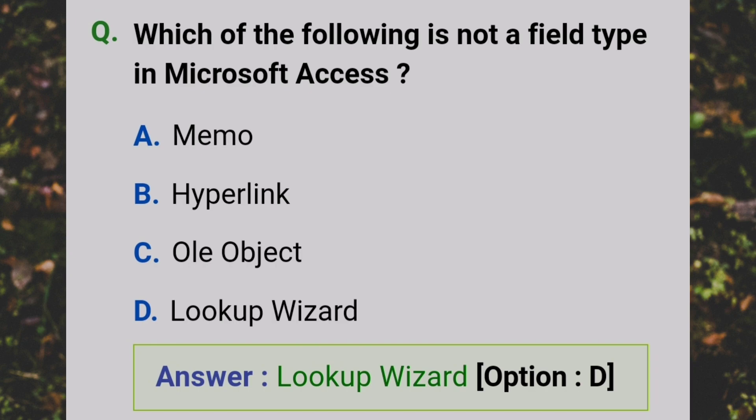Which of the following is not a field type of Microsoft Access? Answer: D - Lookup Wizard.